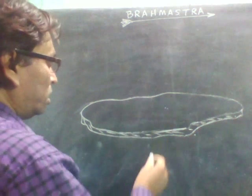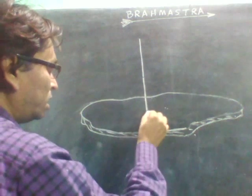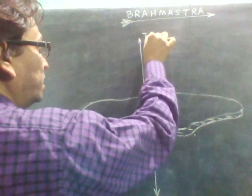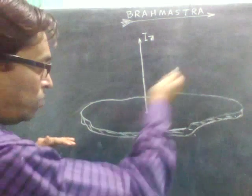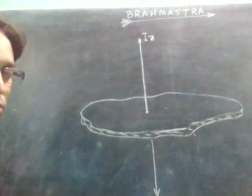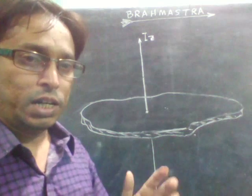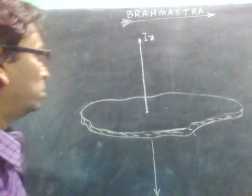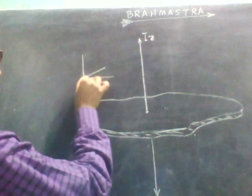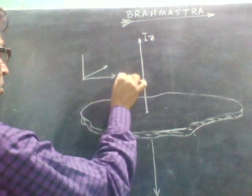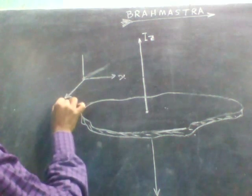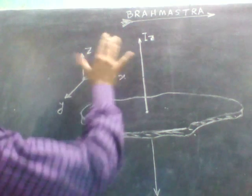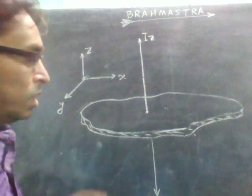Suppose this is a body. We know the moment of inertia about a point, say this one is I_Z. Z means there are two planes: one is XY and another is Z. We consider the horizontal plane as the XY plane, and the vertical axis from the XY plane is the Z axis. So we consider this three-dimensional axis system with X, Y, and Z.